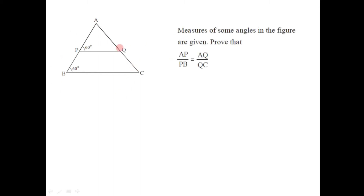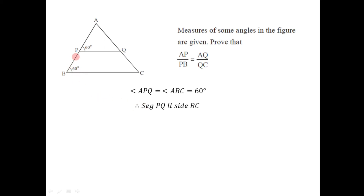The next question is based on this diagram. Some angle measures are given and we have to prove that AP divided by PB equals AQ divided by QC. Given: in triangle ABC, the measure of angle APQ is 60 degrees and the measure of angle ABC is also 60 degrees, so these two angles are congruent. Considering PQ and BC as two lines with AB as their transversal, these two equal angles are corresponding angles, so by the corresponding angles test, side PQ must be parallel to side BC.